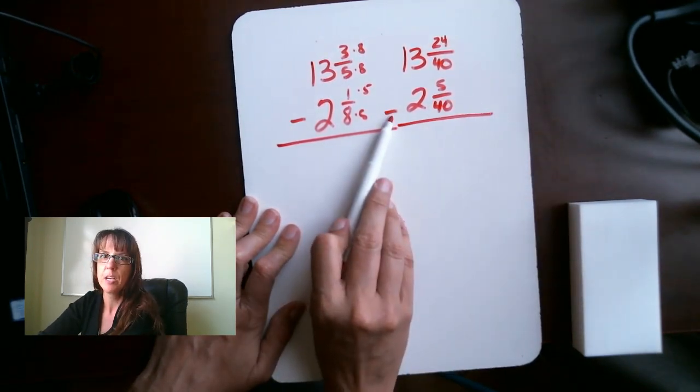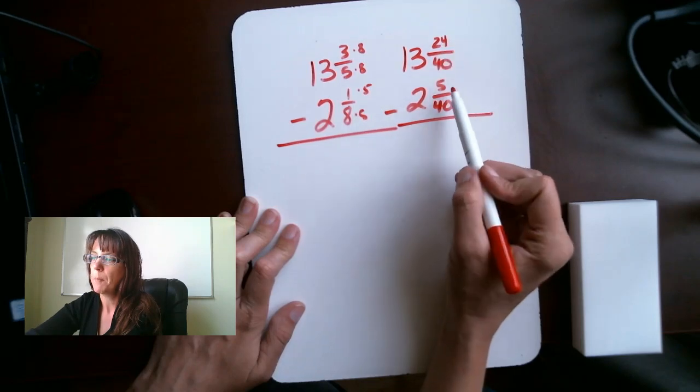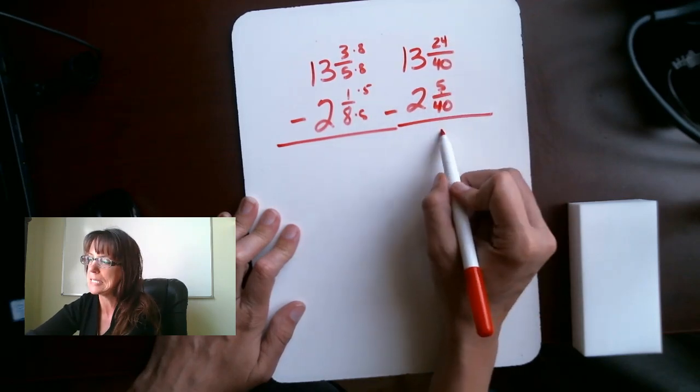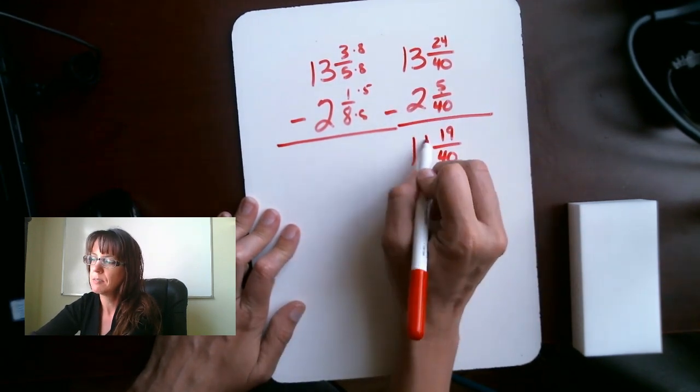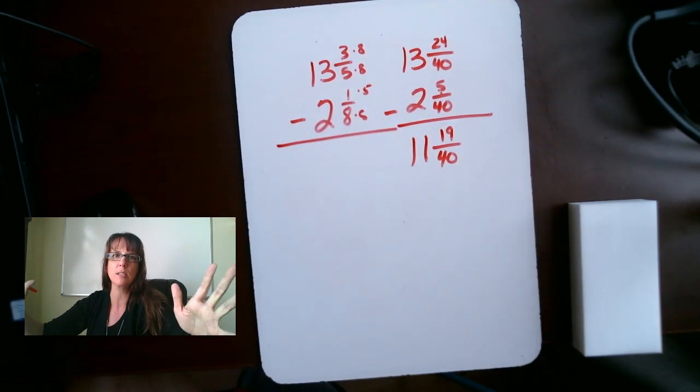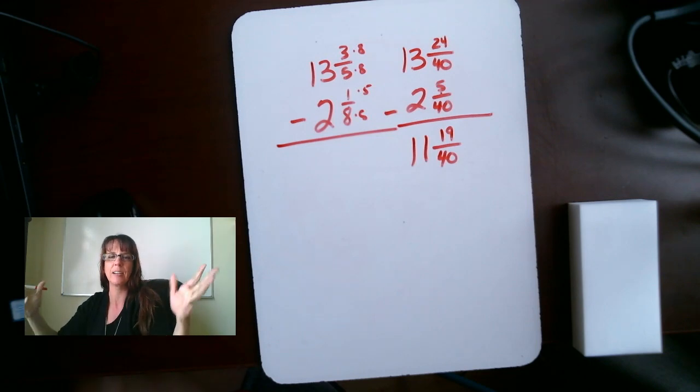We're subtracting this time. So, we want to do 24 minus 5 is going to give us 19 over 40. 13 minus 2 gives us 11. Bam. You guys are done. Excellent work.